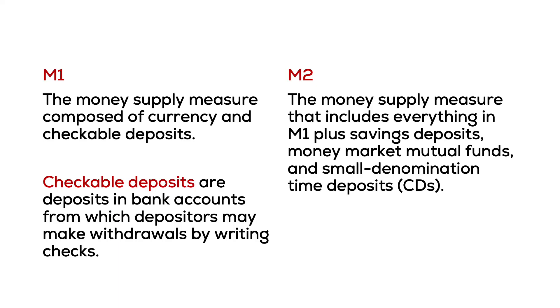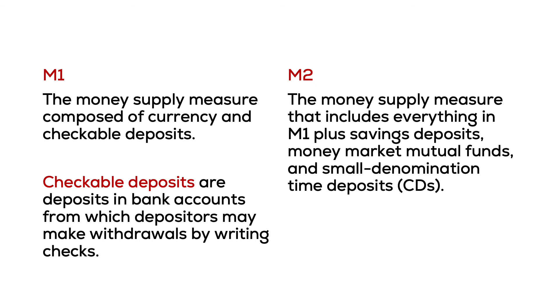So now we know what the function of money should be. Let us start to shift to how we measure how much money is actually in the economy. Economists define money in several ways. One way is in broad categories called M1 and M2. M1 is made up of what we call liquid forms of money. It includes currency and checkable deposits. Liquid here means how easy the money is to use — the easier the money is to use, the more liquid it is. M2 includes all of what is in M1 plus other less liquid deposits like money market accounts, mutual funds, and certificates of deposit, also known as CDs.